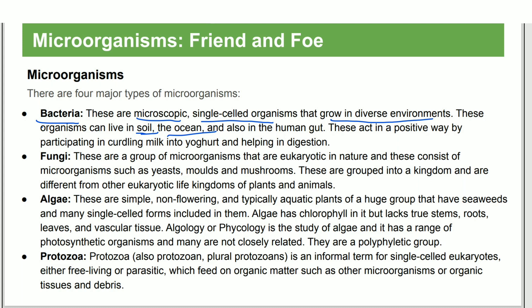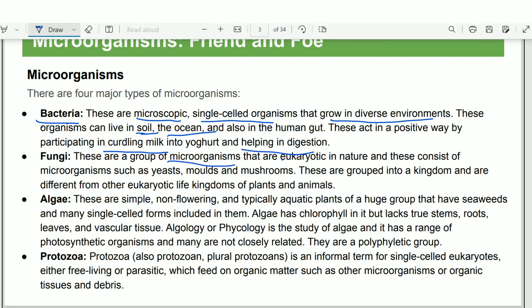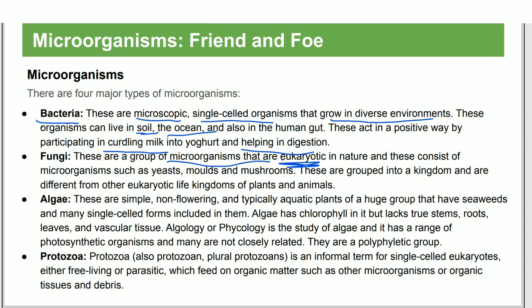Microorganisms are also used in positive ways — for example, bacteria help in the production of milk curd and aid in digestion. Fungi is a group of eukaryotic organisms that includes yeast, molds, and mushrooms. They are a separate kingdom of organisms, different from other eukaryotes.